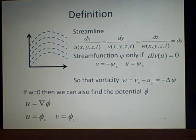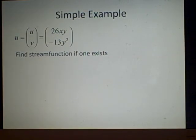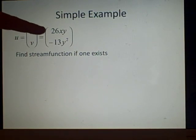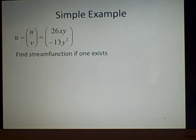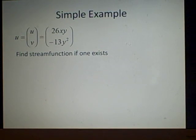So I've got an example now. Here we've got our function u in form of u and v. We've got u is 26xy and v is minus 13y squared. Now it's a simple example I've made. We want to find the stream function if it exists.